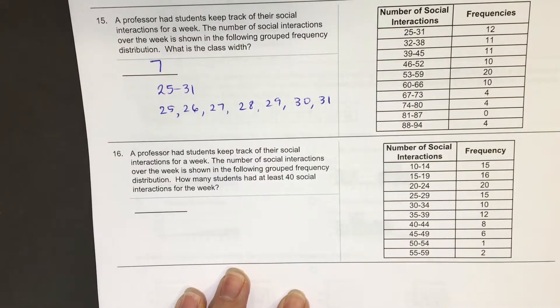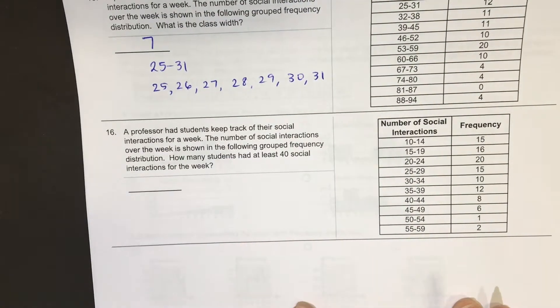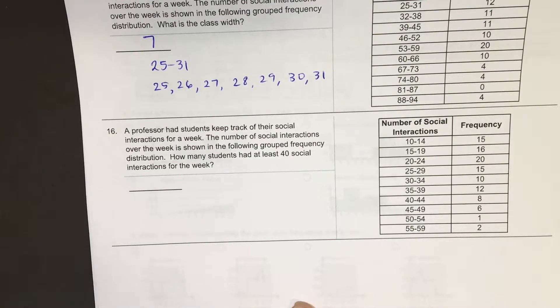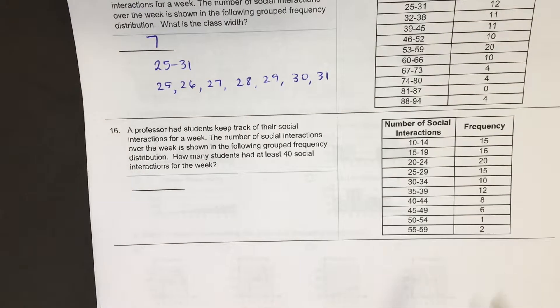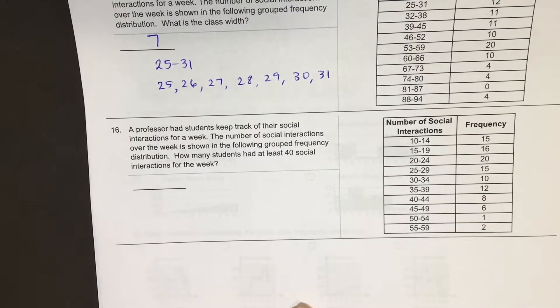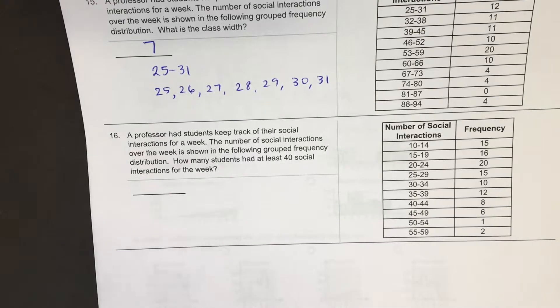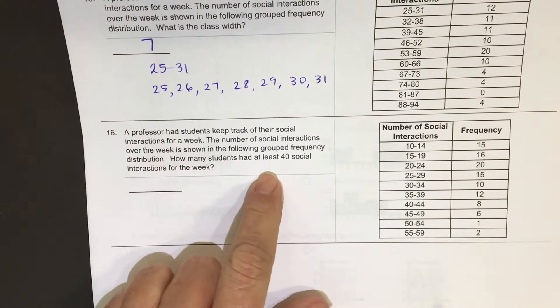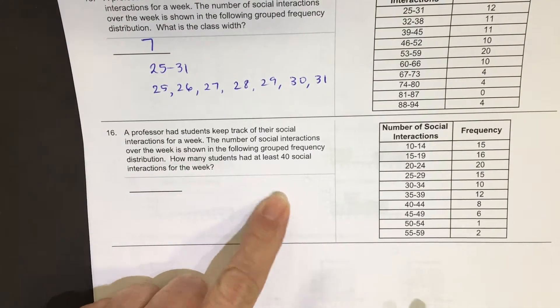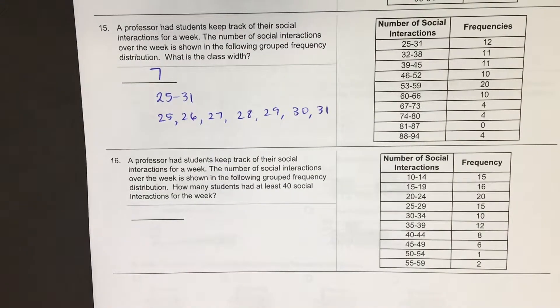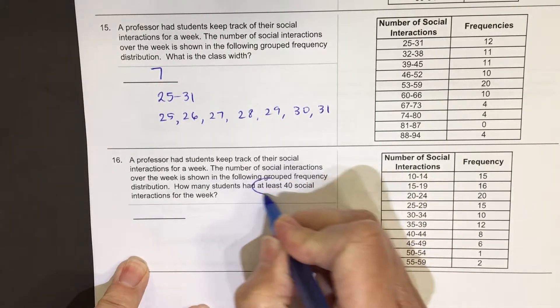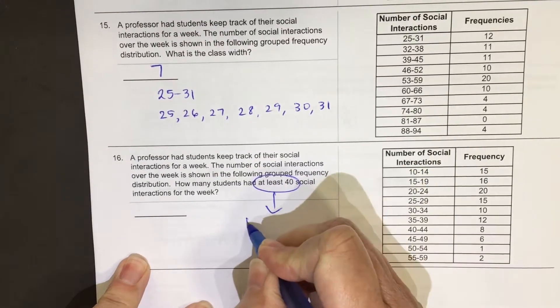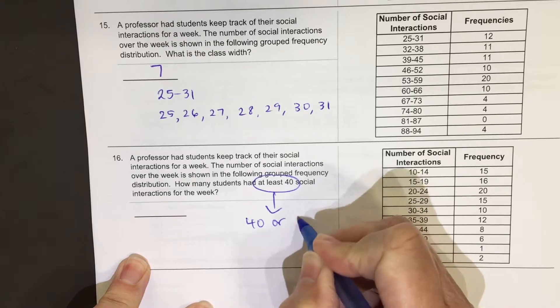Number 16. The professor had students keep track of their social interactions for a week. The number of social interactions over the week is shown in the following group frequency distribution. How many students had at least 40? At least 40. That means 40 or more.